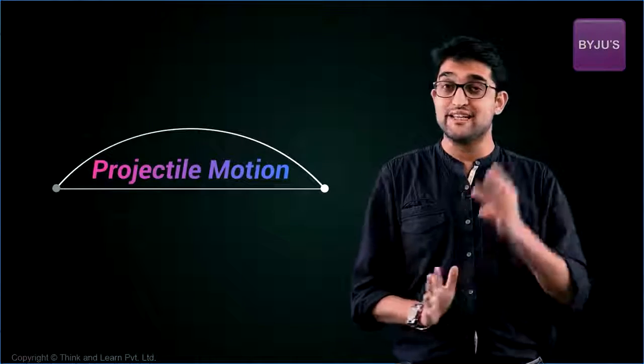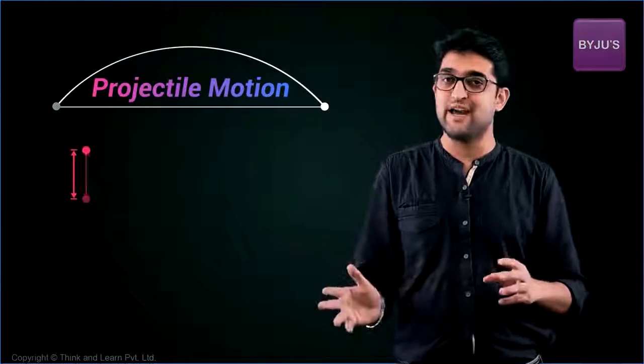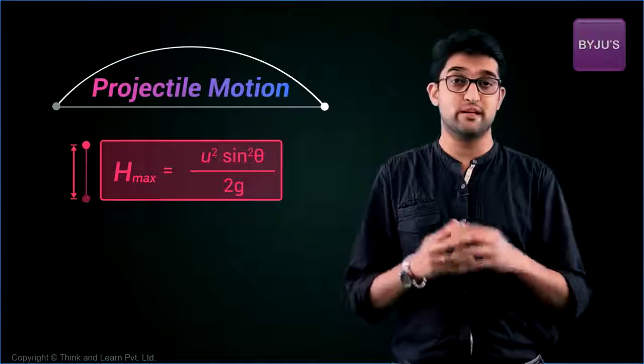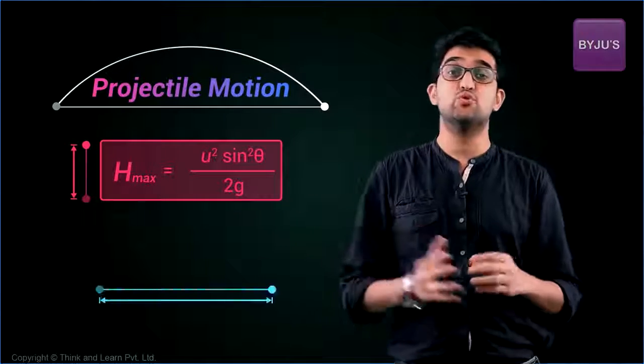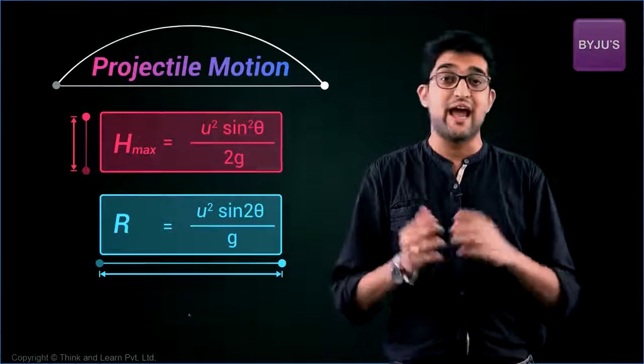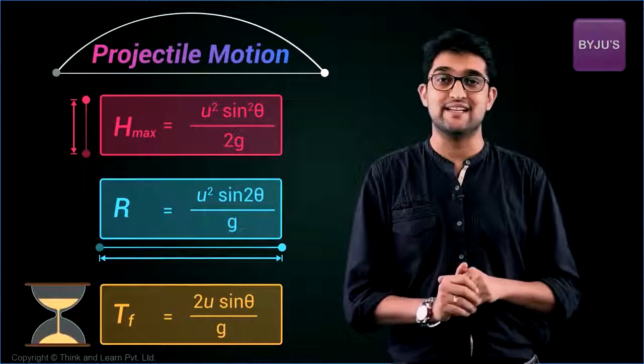As far as your syllabus is concerned, projectile motion is actually three formulas. Maximum height that's u square sine square theta by 2g, range that's u square sine 2 theta by g, and time that's 2u sine theta by g.